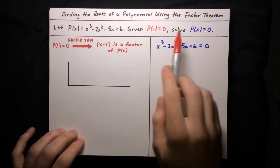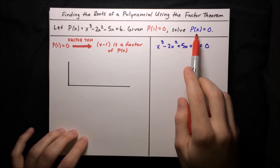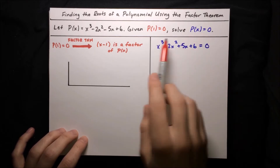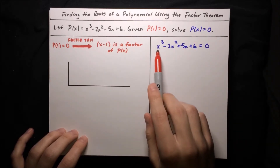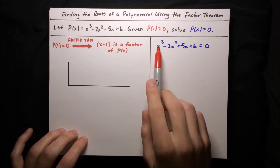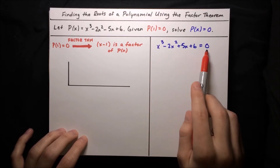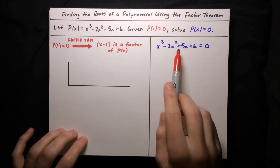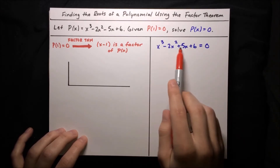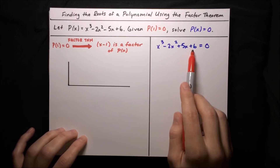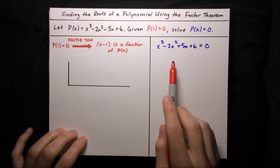We're given that 1 is a root of the polynomial, and we want to find the other roots. So p of x equals 0 — if we substitute in the expression for the polynomial, that just becomes x cubed minus 2x squared minus 5x plus 6, equal to 0. In order to solve this equation, we'd ideally like to factor this polynomial, so we can use the zero product property and set each factor equal to 0, which is a lot easier to solve.